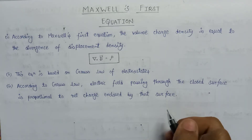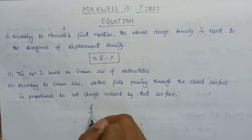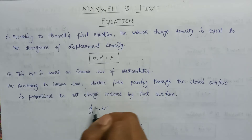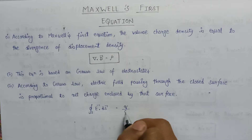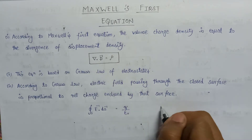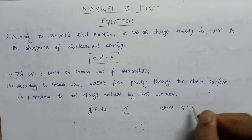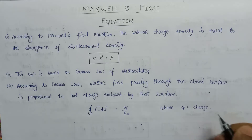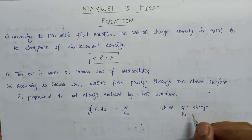If we write it mathematically, it will be: the surface integral of E dot dS over a closed surface S is equal to Q over epsilon naught, where Q is the net charge enclosed by that surface and epsilon naught is the permittivity of free space.